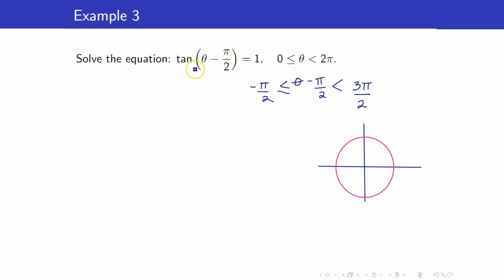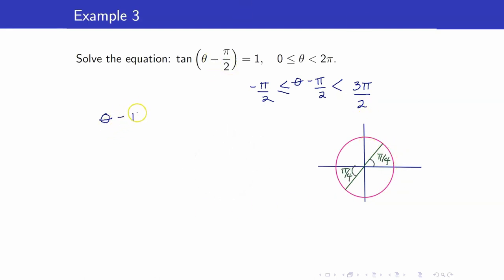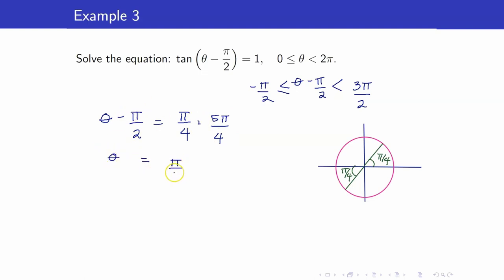What is an angle whose tangent is equal to 1? That angle is pi over 4. And another angle in quadrant 3 whose reference angle is pi over 4. So theta minus pi over 2 must be pi over 4, and the angle on the third quadrant is pi plus pi over 4, which is 5 pi over 4. These are the only two solutions for theta minus pi over 2, since it ranges from negative pi over 2 to 3 pi over 2. Adding pi over 2 to both sides, we get 3 pi over 4 and 7 pi over 4.